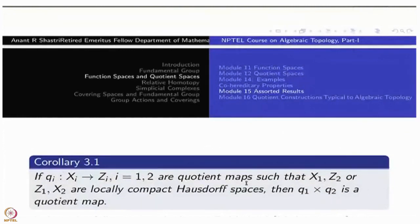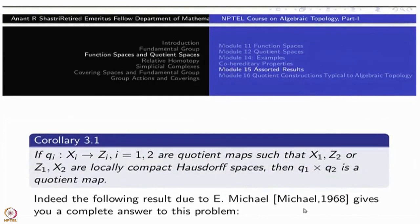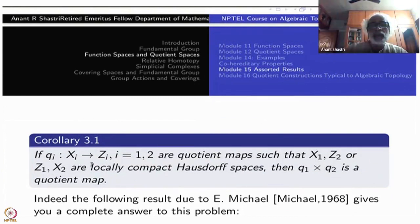So once we have this, we have observed the corollary is that, suppose you have two quotient maps, Q_i from X_i to Z_i, such that X_1 and Z_2 are locally compact or Z_1 and X_2 are locally compact.